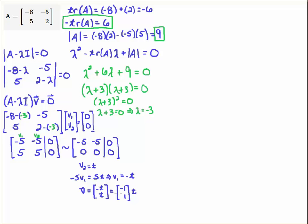So if I factor out the t, I get minus 1, 1t. And that t means we can multiply this vector by any real number. So, for example, you won't have unique eigenvalues. They'll be unique up to a scalar multiple.